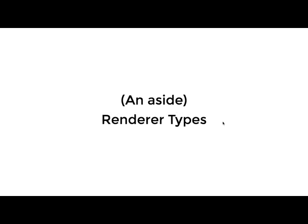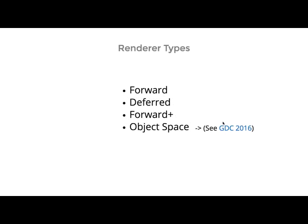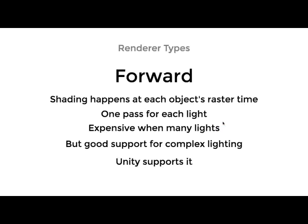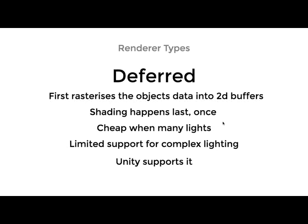That was a forward renderer, but there are a few types of renderers. There is forward, forward plus, and object space, which is very new and interesting, just presented at GDC. In forward rendering, we rasterize each geometric object in the scene and light and shade it at rasterization time. That entails doing a light pass for each light for every object, so if you have many lights, this gets expensive really fast. But you can do quite complex lighting with it, and Unity supports this mode.